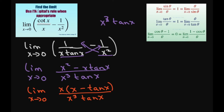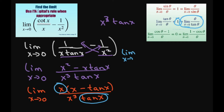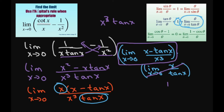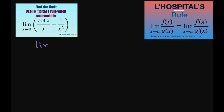The next step is to split this up. I know that x divided by tan of x, when you take the limit as x approaches zero, equals one. So I'm going to write this as the limit as x approaches zero of (x minus tan of x) divided by x cubed, times the limit as x approaches zero of x divided by tan of x. This second limit just equals one, so we have the limit as x approaches zero of (x minus tan of x) divided by x cubed.